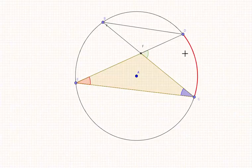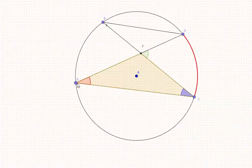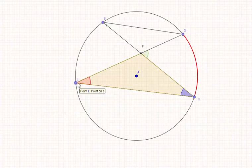And what we know is that this arc DC is also the angle double of angle E here, inscribed angle E. Let's proceed.